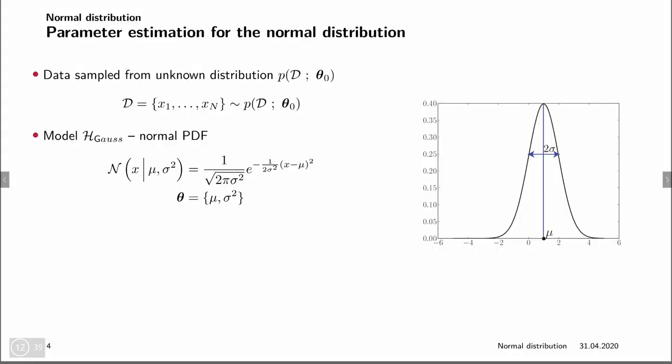Once we define the normal distribution, we want to fit it. Given some data, we want to find a good probability distribution that describes it. In practice, when given data, we do not know from what distribution it comes. So we need a model — as we always do in machine learning. In this case, we model the data using the normal distribution and say that all values x are sampled from that normal distribution.